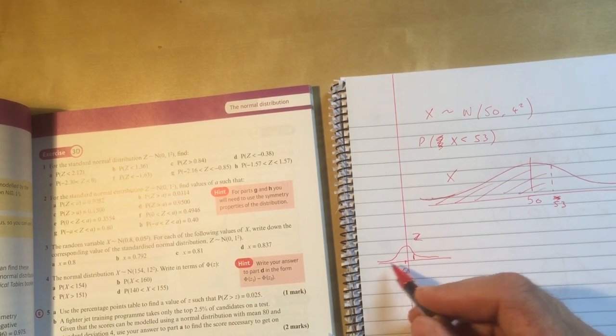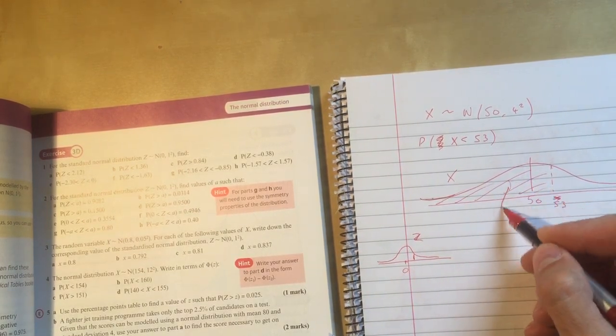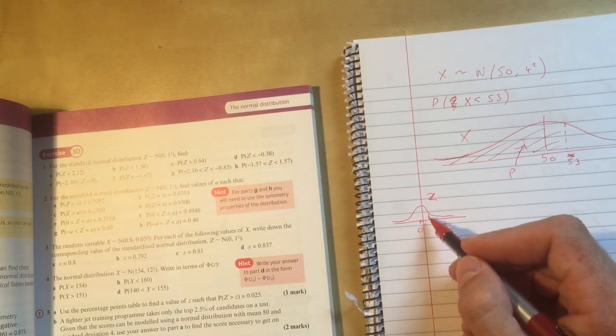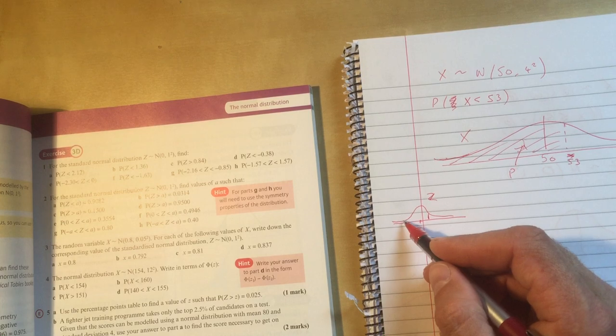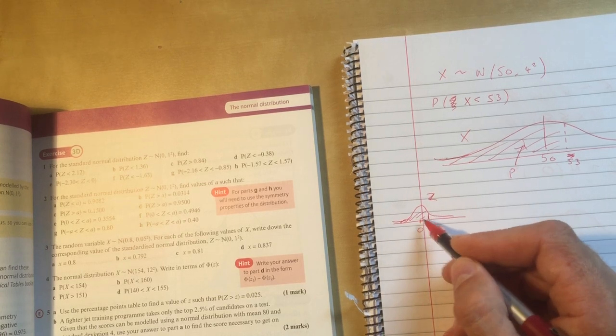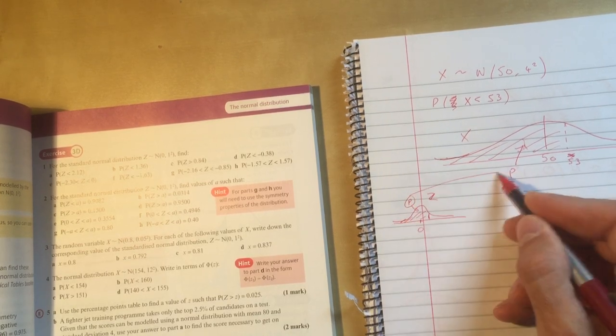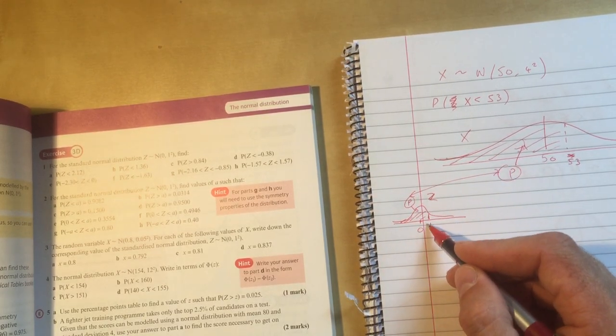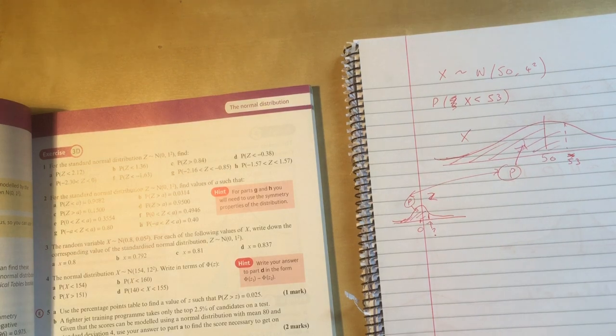Now, if I think about it, whatever that probability there is, I don't know what it is, let's call it p, there has to be a point on the z distribution where the area to the left is also p, right? Where that p and that p are the same, and what's that number there.